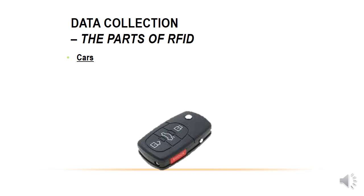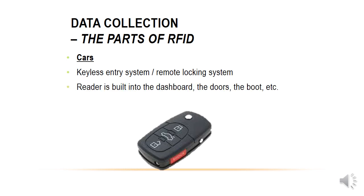Another example is a car's keyless entry or remote locking system. You can build the reader into the dashboard, doors, or boot. When you bring the key near, it identifies your key and the door opens.